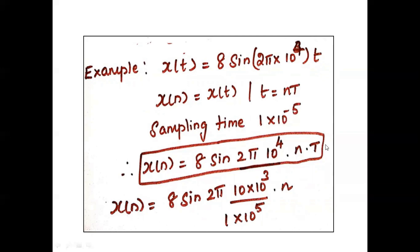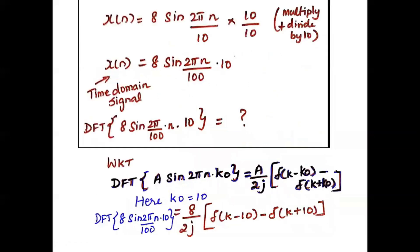In the next step, the sampling time T equals 1 divided by the sampling frequency. So we will get the frequency as 1 × 10⁵ × n. This is the signal we are giving as input to the FFT model. So x(n) = 8·sin(2π·n/10), and we multiply and divide by 10.